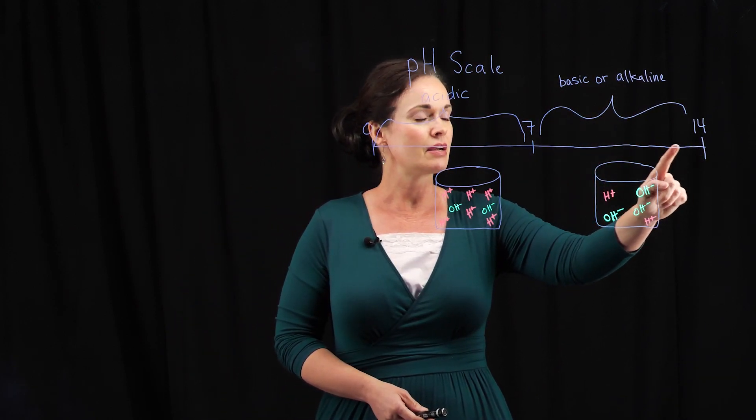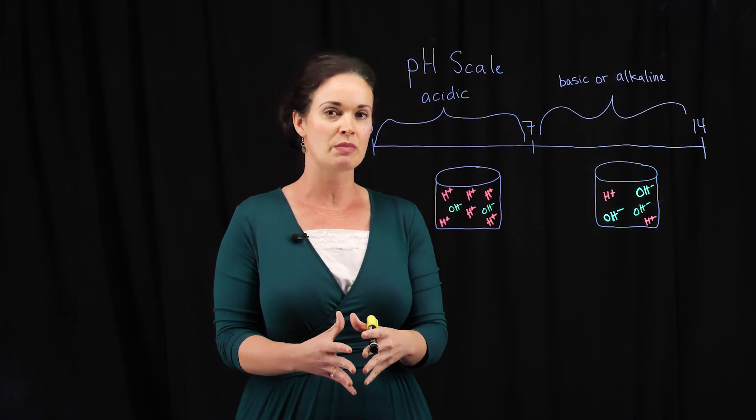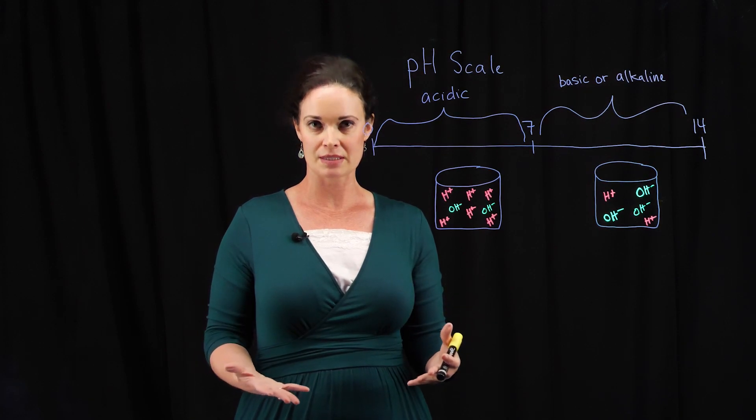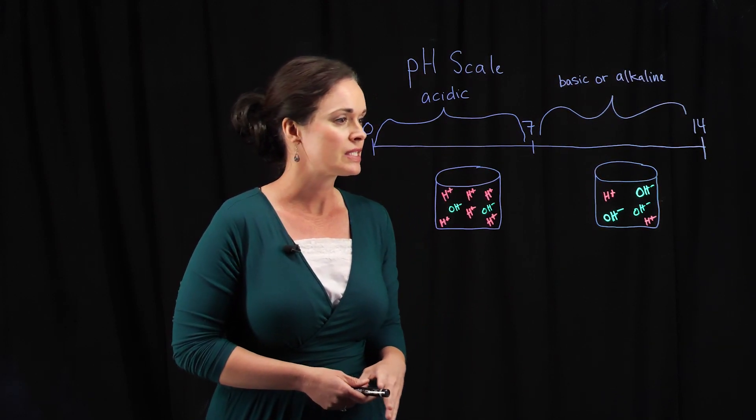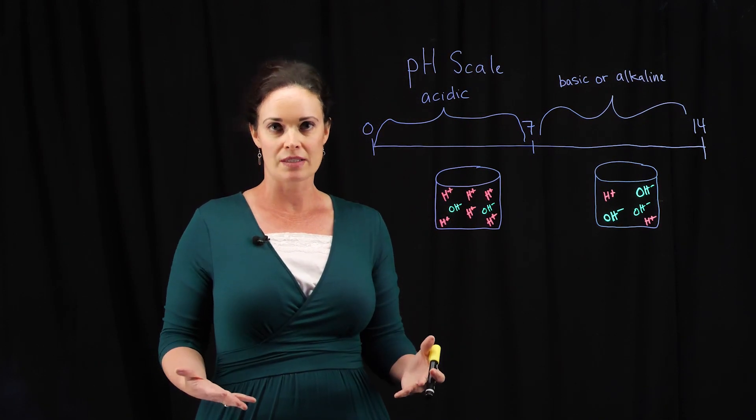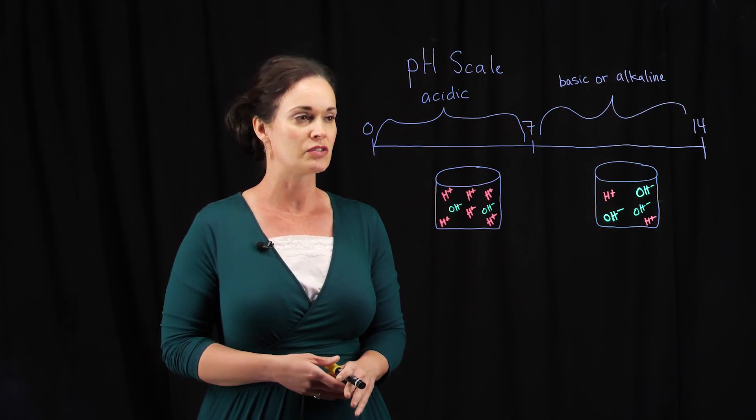If you look at this part of the diagram, all of these values ranging from just above 7 up to 14 are considered to be what's known as basic or alkaline. The reason they're basic or alkaline is because the amount of free hydrogen is relatively low—there's more of that hydroxyl ion, less of the free hydrogen.